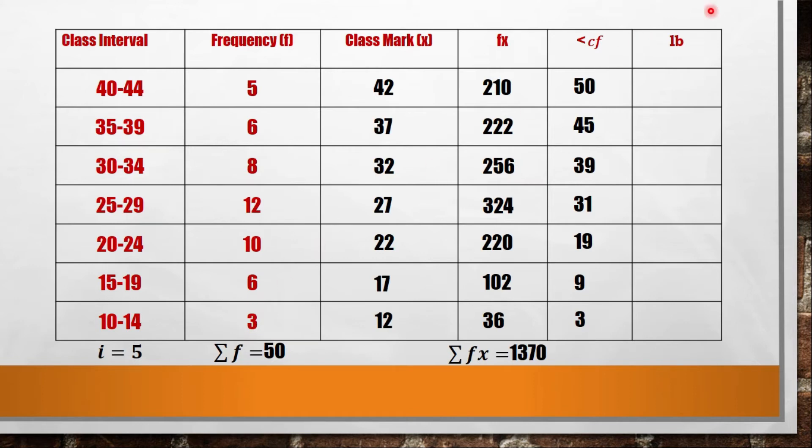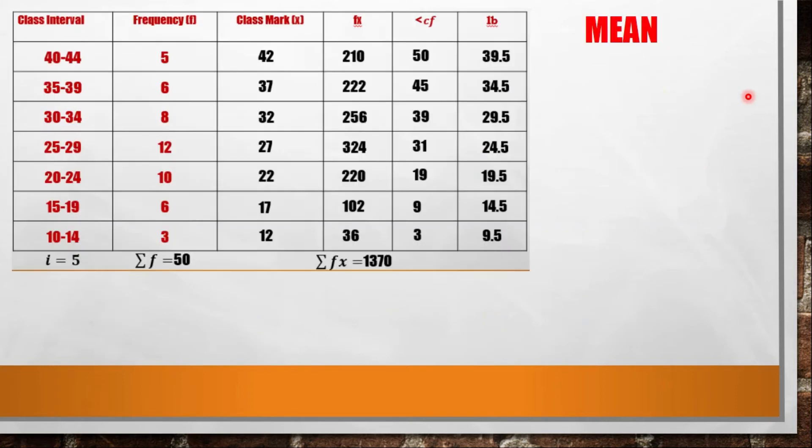And now for the lower boundary. Lower boundary is based on the smaller number in the class interval. So for 40, you subtract 0.5. Whoever is the smaller number, subtract 0.5. So 40 minus 0.5 you have 39.5, 35 minus 0.5 is 34.5, and you do the same thing with the other class intervals. That's it, we are done completing the table. Now let's proceed to the formula for finding the mean, median, and mode.